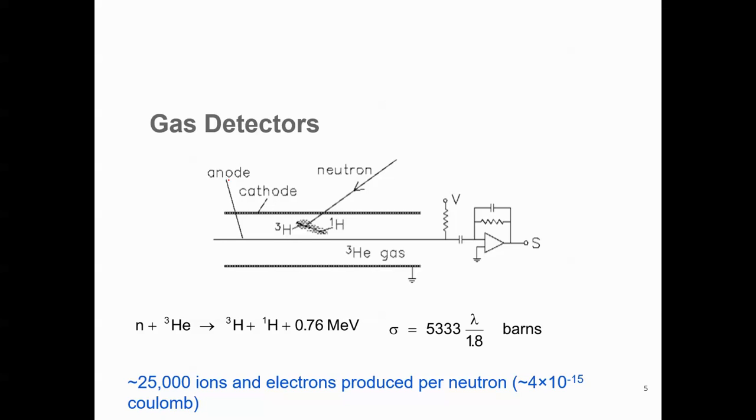One of the classes is gas detectors. In gas detectors, we typically have a helium gas-filled tube. For example, in this case, let's say this is a helium-3 gas-filled tube. So in this particular detection system, we exploit this reaction where the incident neutron reacts with helium-3 nuclei to give two fission fragments and 0.76 mega electron volt of gamma radiation. This gamma radiation interacts with the gas present and ionizes it to produce around 25,000 ions and electrons pairs per neutron.